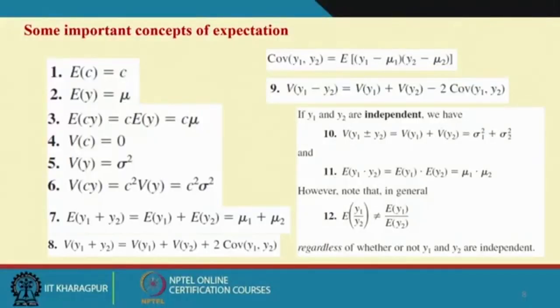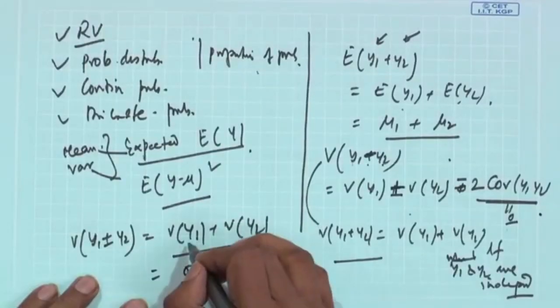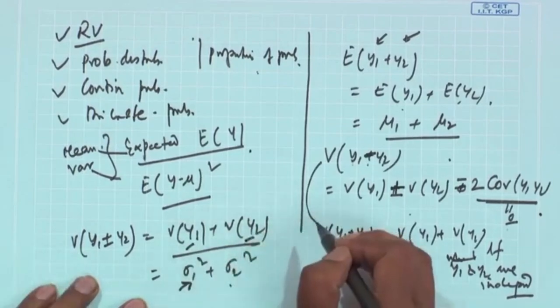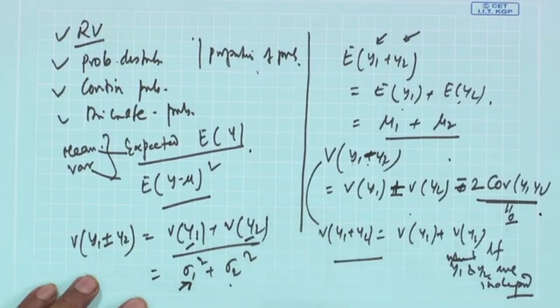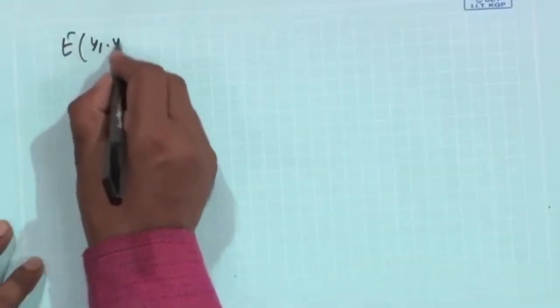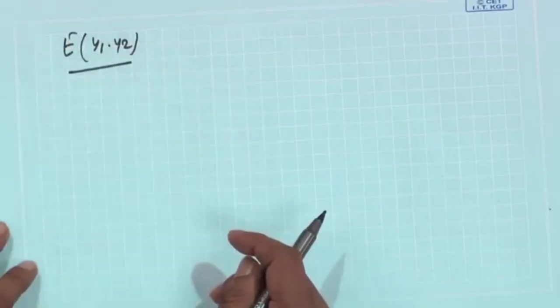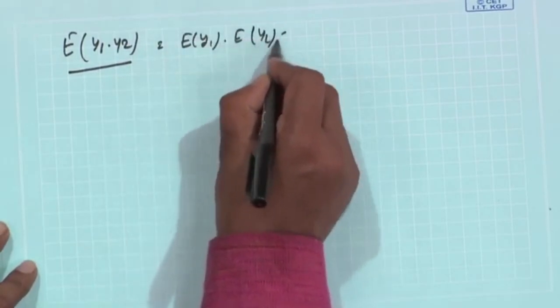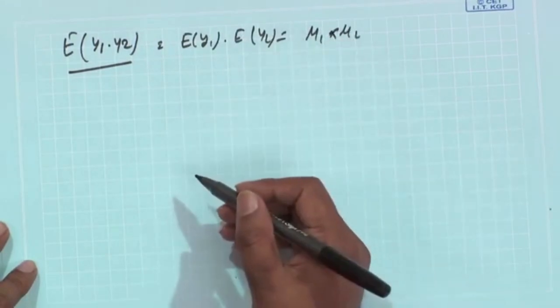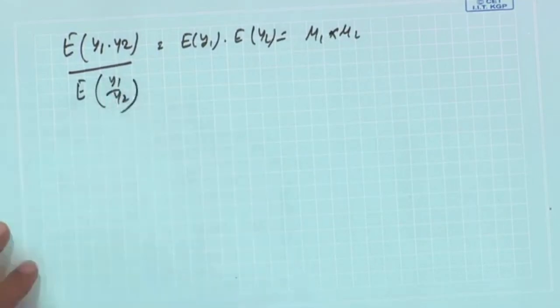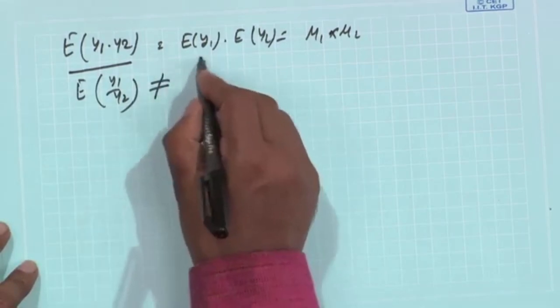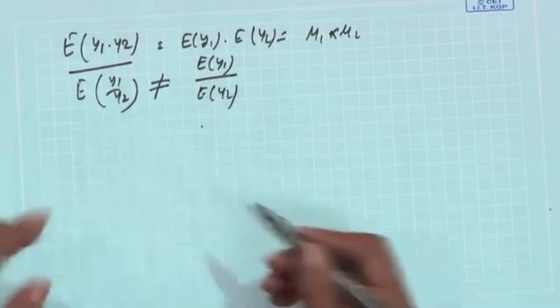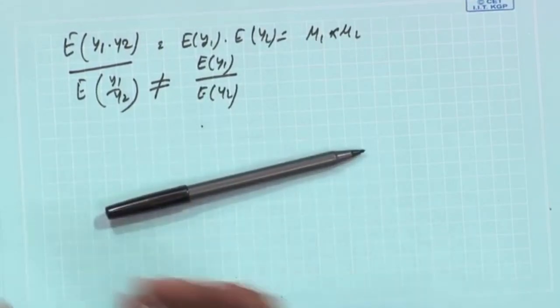If y1 and y2 are independent, then E(y1 · y2) = E(y1) · E(y2) = mu1 · mu2. However, the ratio E(y1/y2) does not simplify in the same way, irrespective of independence.